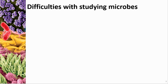Microorganisms aren't the easiest things to study. We talked about in Chapter 1 some reasons why they're difficult and some reasons why they are easy. But some of the problems you run into with trying to study microbes is being able to separate species, because microbes almost never exist alone. There are generally many microbes existing on the same substrate, growing on whatever it is you're collecting them from.